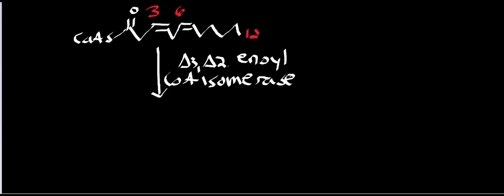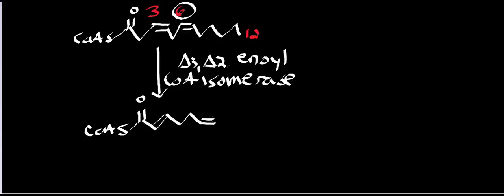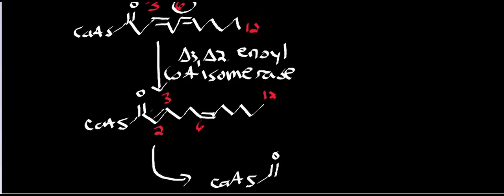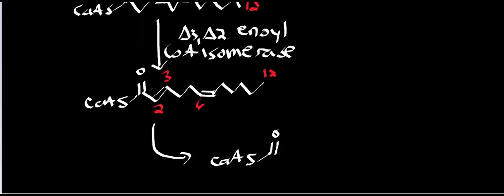The next enzyme we use is delta-3, delta-2-enoyl-CoA isomerase. This enzyme takes the cis bond between carbons 3 and 4 and turns it into a trans bond between carbons 2 and 3. So the double bond is still at carbon 6 from the second double bond, and the new trans bond is now at carbon 2-3. Notice that we got that double bond without fatty acyl-CoA dehydrogenase — the FAD-dependent enzyme — so we completely bypassed that enzyme and end up not producing an FADH2.